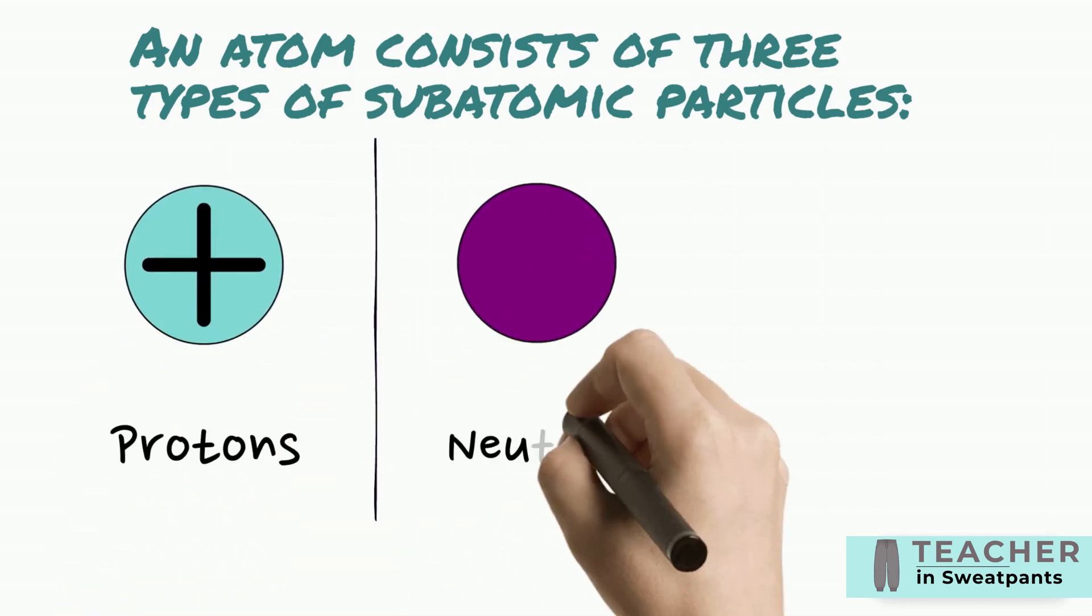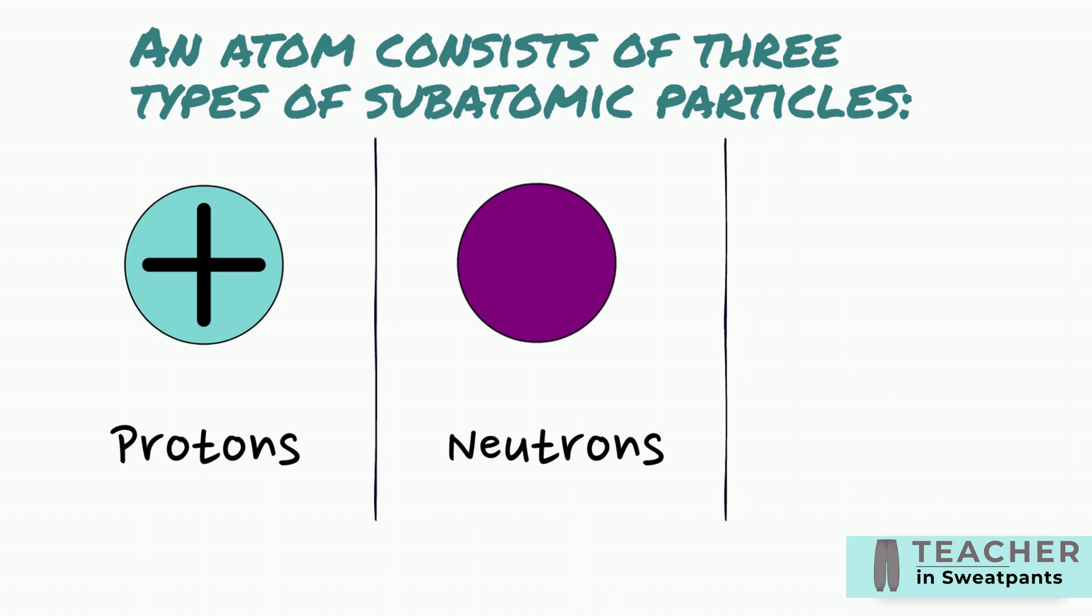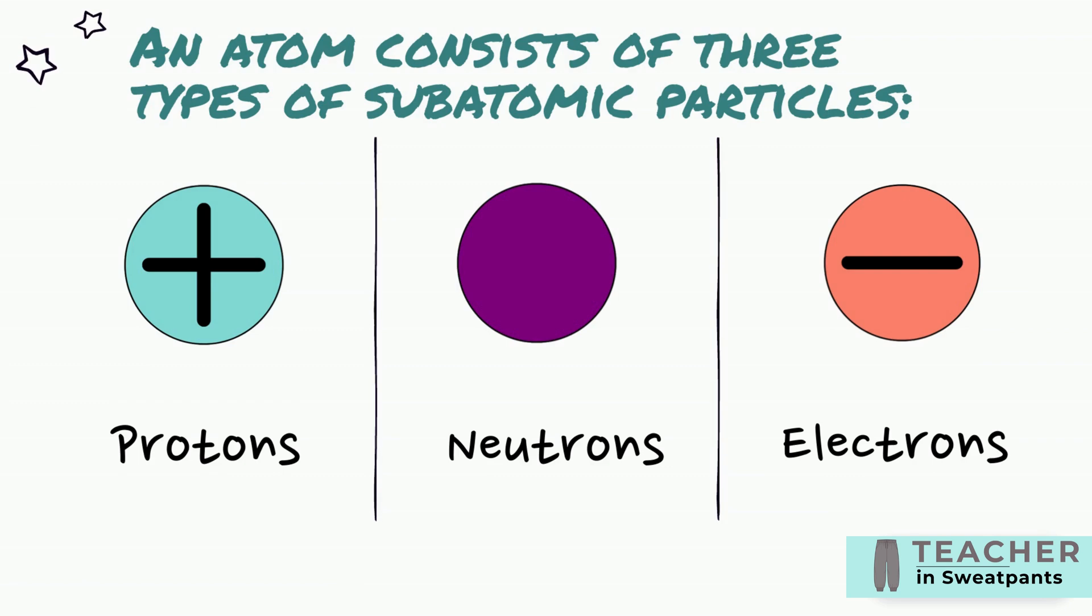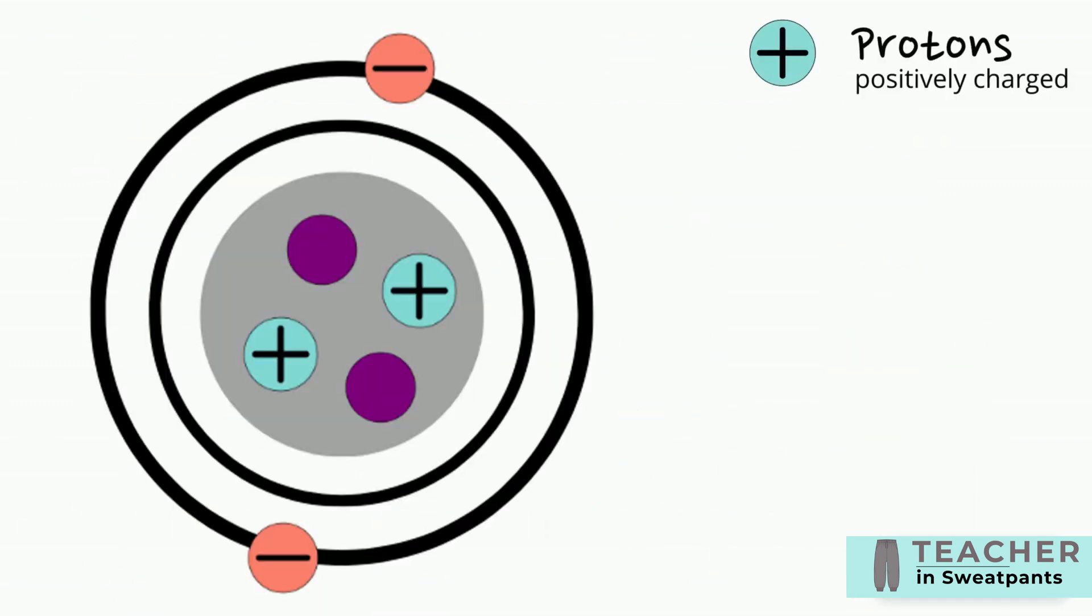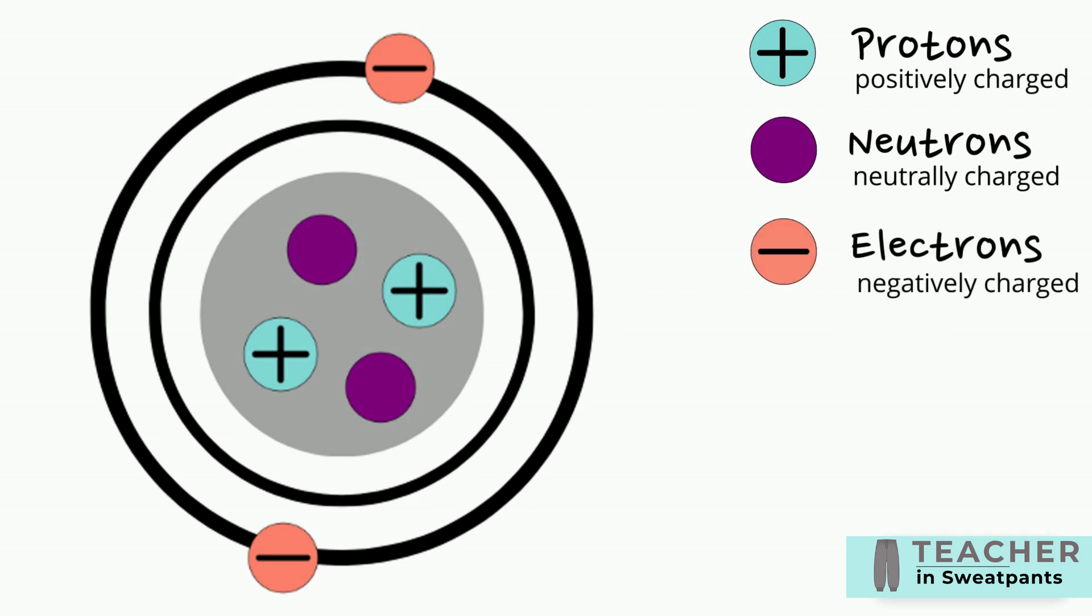Protons, neutrons, and electrons. Protons are positively charged. Neutrons are neutrally charged. Electrons are negatively charged. The atom also has a nucleus and atomic orbitals.